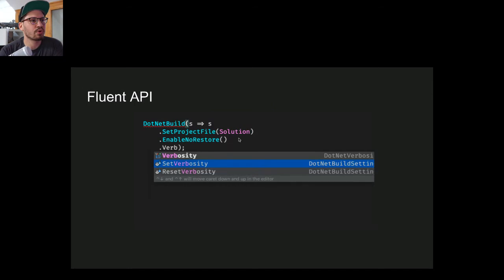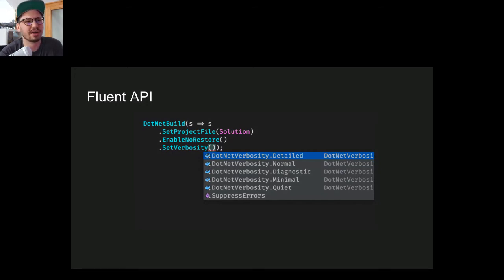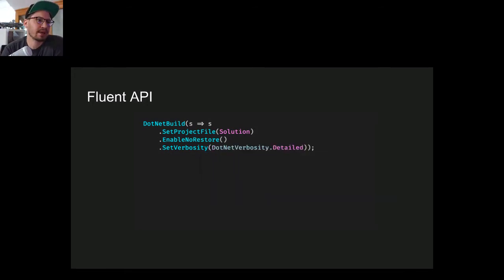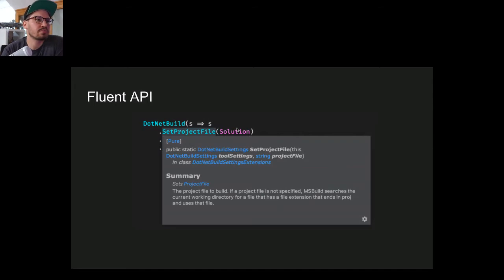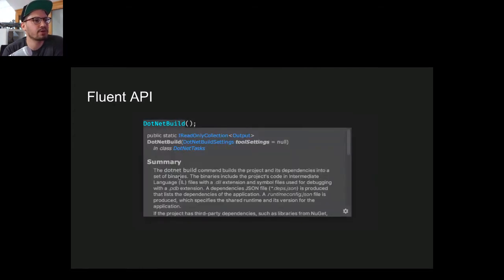For verbosity, since it has a closed set of arguments, the API prevents you from accidentally passing the wrong value — no more confusing 'verbose' with 'detailed' or 'diagnostics.' If you navigate to one of these methods you can invoke help and see the official documentation for that tool, so you know exactly what dotnet build is doing behind the scenes.